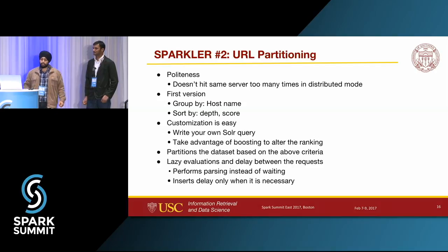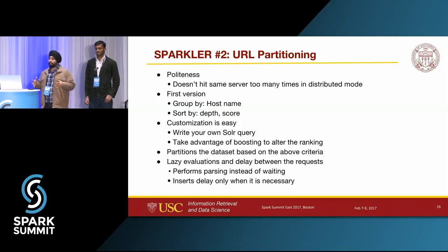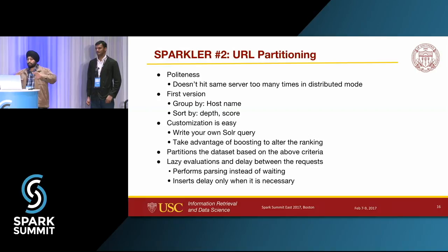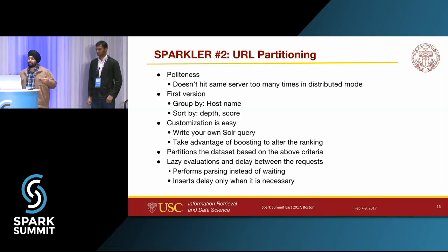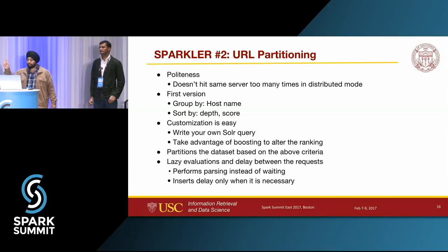The next feature is partitioning, which derives from the need for crawl politeness or fair fetching. If you have to crawl Wikipedia with a big cluster, you don't want to overload the Wikipedia server with too many parallel requests — in worst cases they might block you. Politeness is a big factor. We partition URLs based on host names and fetch in parallel with appropriate delays between URLs for each host. We also sort generated URLs by depth and score so we follow a proper breadth-first search fashion, starting from seed URLs.